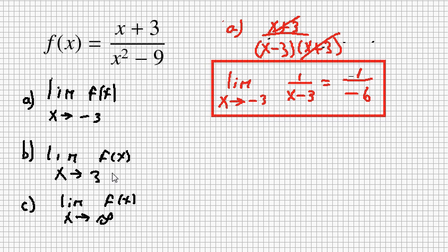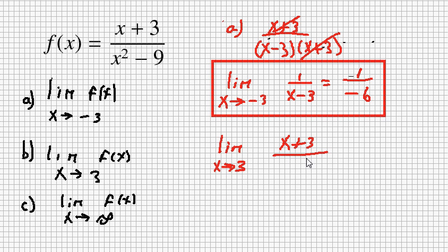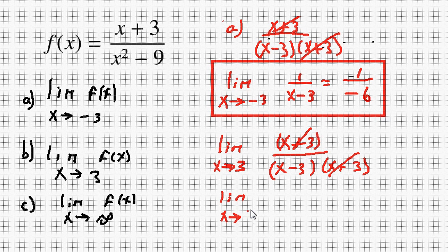The next one is part b: find the limit as x approaches 3. That might be a little more complicated. I'll factor it again the same way — x plus 3 over the quantity x minus 3 times x plus 3 — and cancel out the x plus 3's. So I need the limit as x approaches 3 of 1 over x minus 3.